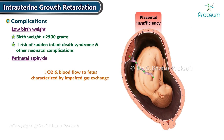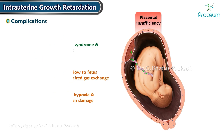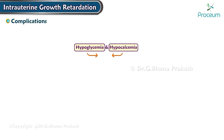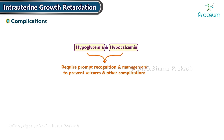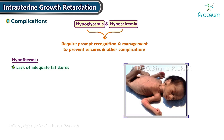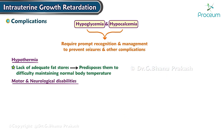Perinatal asphyxia can result from reduced oxygenation and blood flow, leading to fetal acidosis, hypoxia, and potential organ damage. Intrauterine growth restriction newborns are prone to hypoglycemia due to insufficient glycogen stores and to hypocalcemia, both requiring prompt recognition and management to prevent seizures. The lack of adequate fat stores predisposes these infants to hypothermia, with difficulty maintaining normal body temperature. Long-term effects may include motor and neurological disabilities such as cognitive delays, learning difficulties, and other developmental challenges.